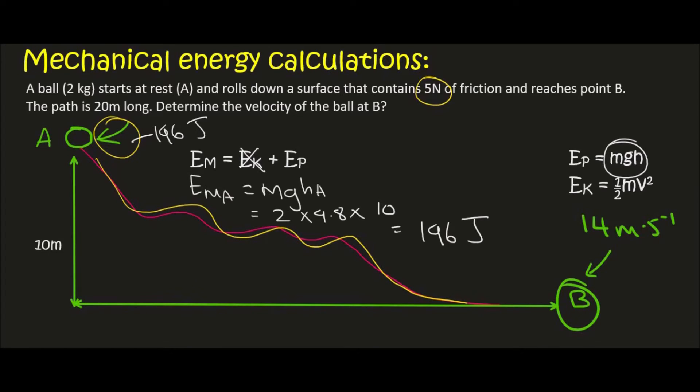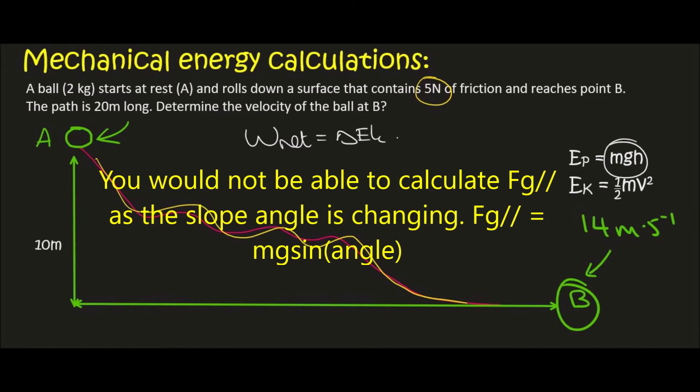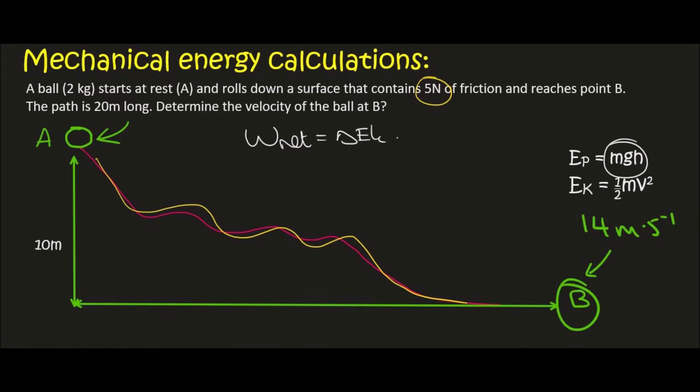Now that would have stayed constant if there was no friction. But there is friction. I said in the previous video that on a curved path we can't use this formula because the angle of the slope would constantly be changing and so your object's acceleration wouldn't be constant. But with the friction we can use the work formula, this one over here.